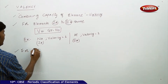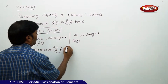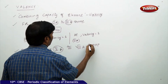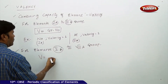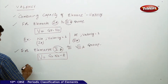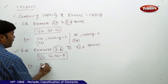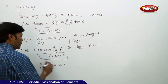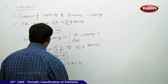For elements from group 5A to group 8A, valency is equal to group number minus 8. For example, phosphorus belongs to group 5A, so valency = 5 minus 8 = minus 3. Ignoring the negative sign, the valency of phosphorus is 3.